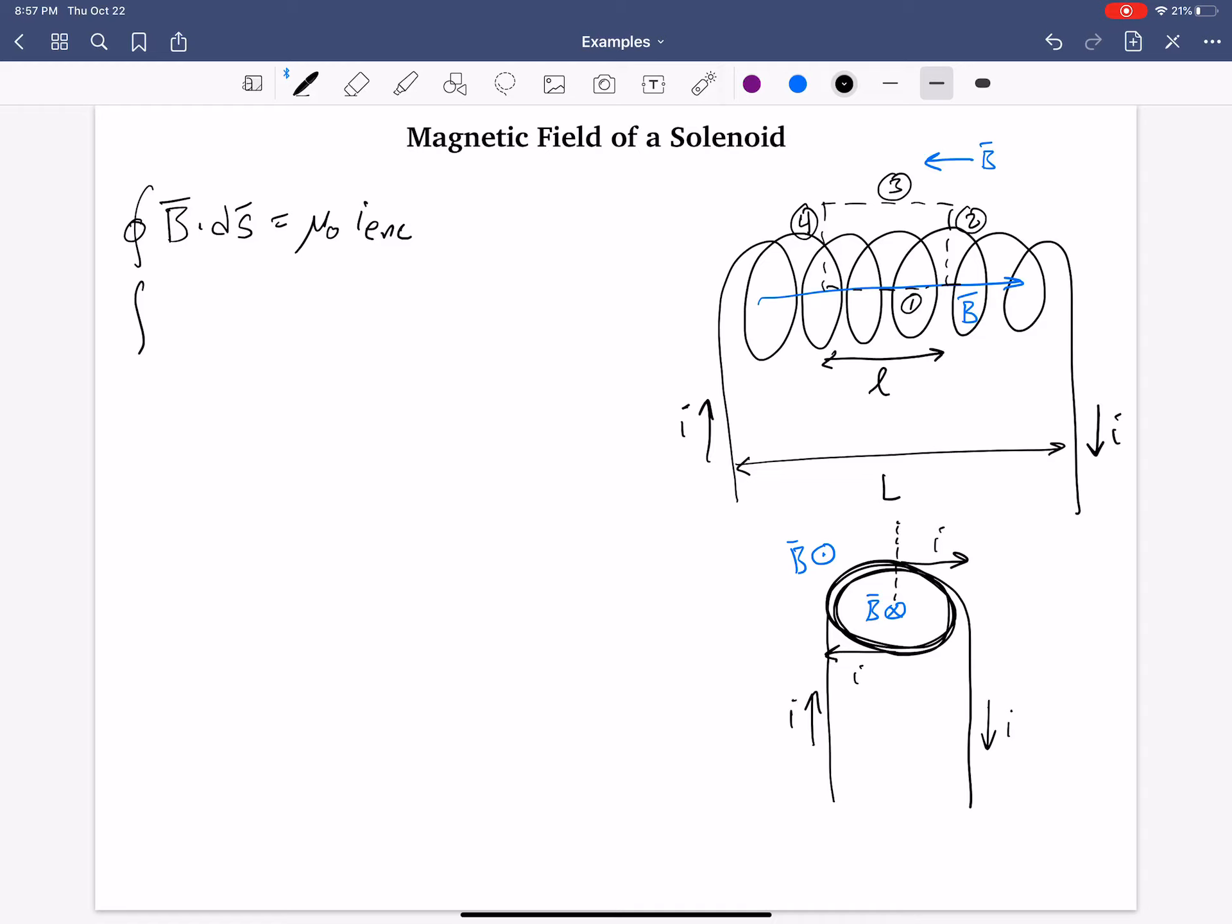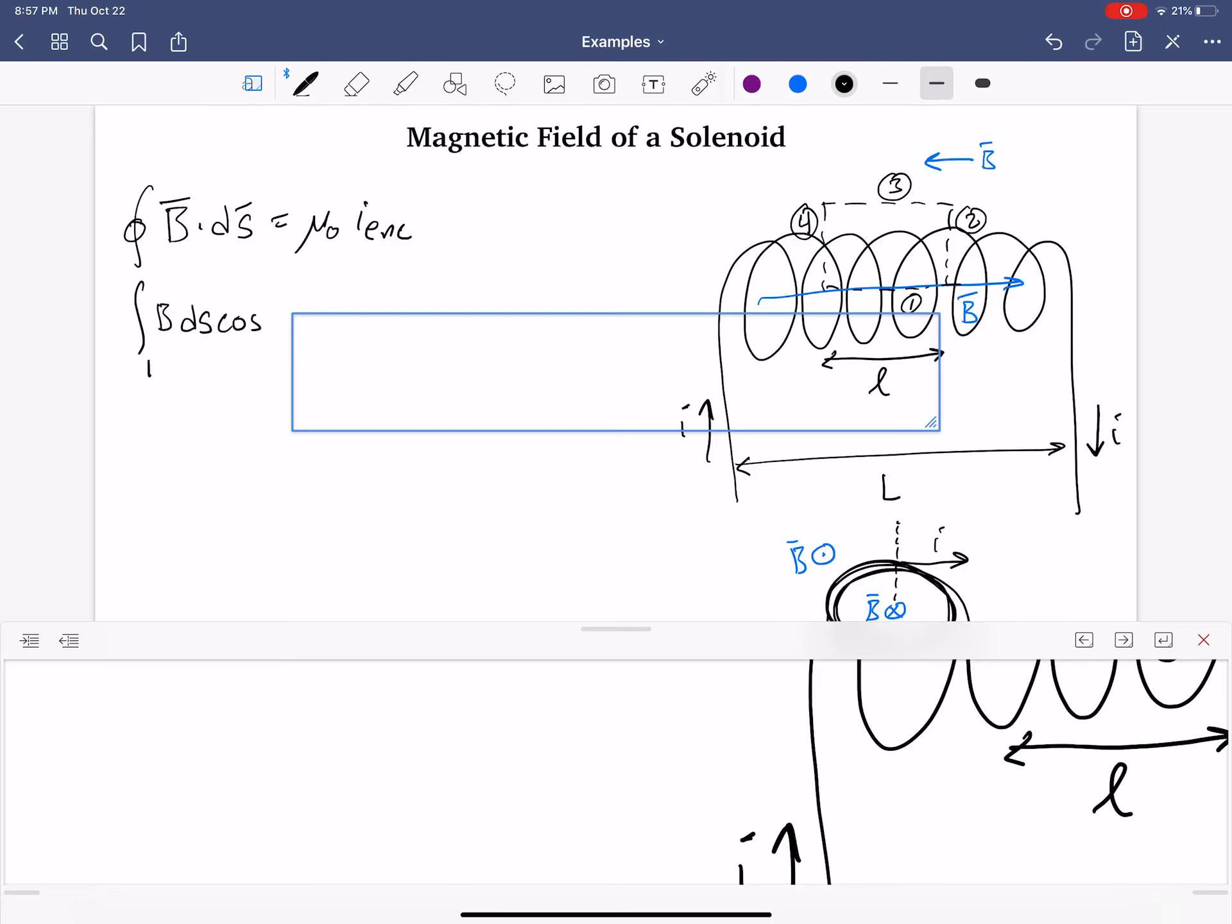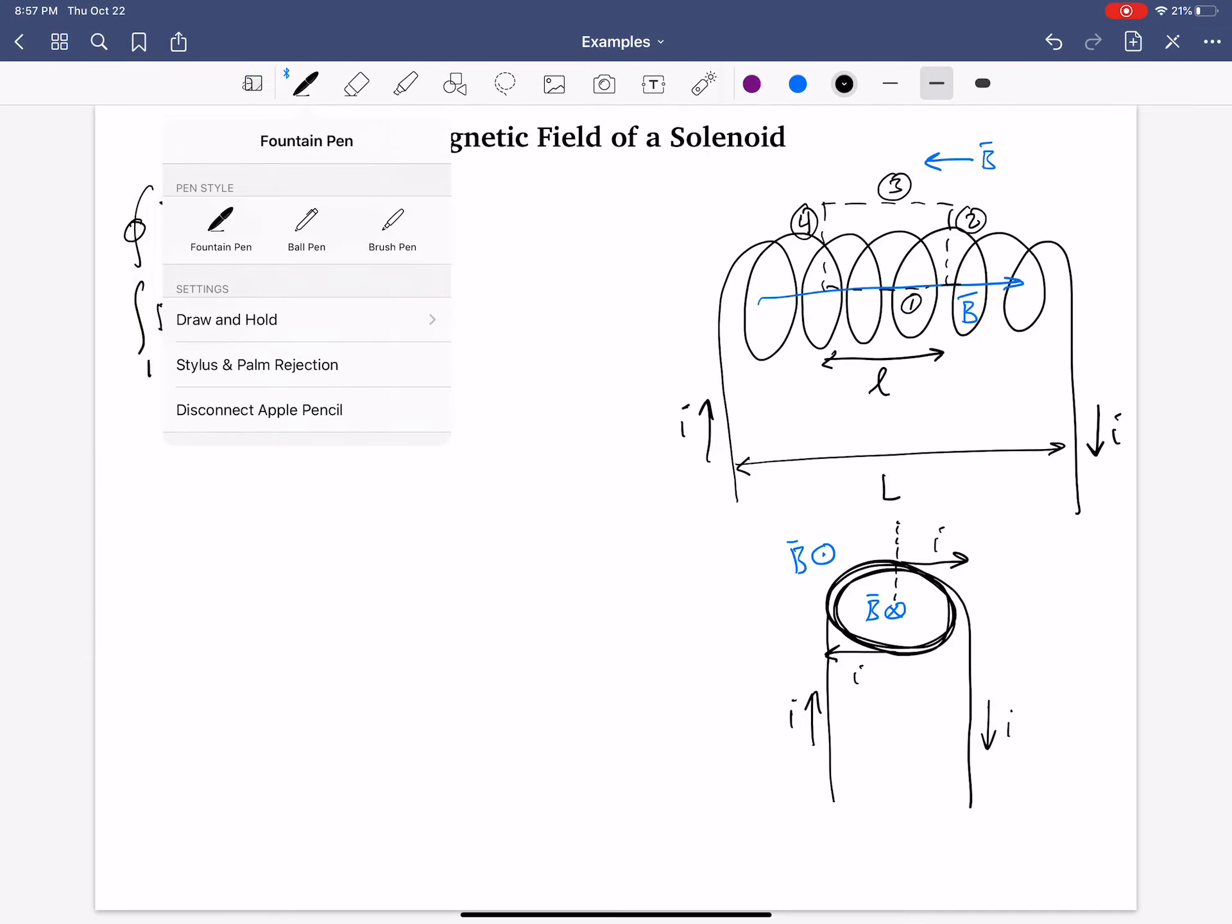So that's a closed loop, meaning I need to integrate from section 1, B, dS, cosine of that angle in segment 1. The segment 1, the dS is, segment 1, dS is that direction, right? To the right. But that's also the direction of magnetic field, B, and then dS. So theta is 0.